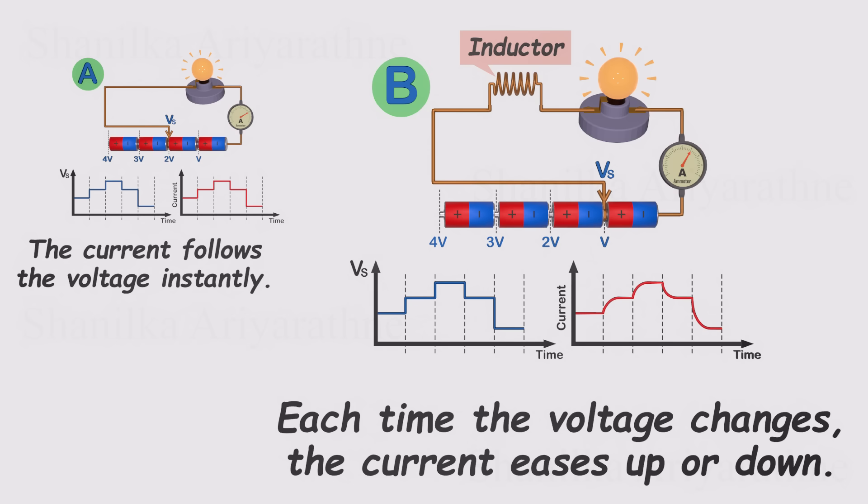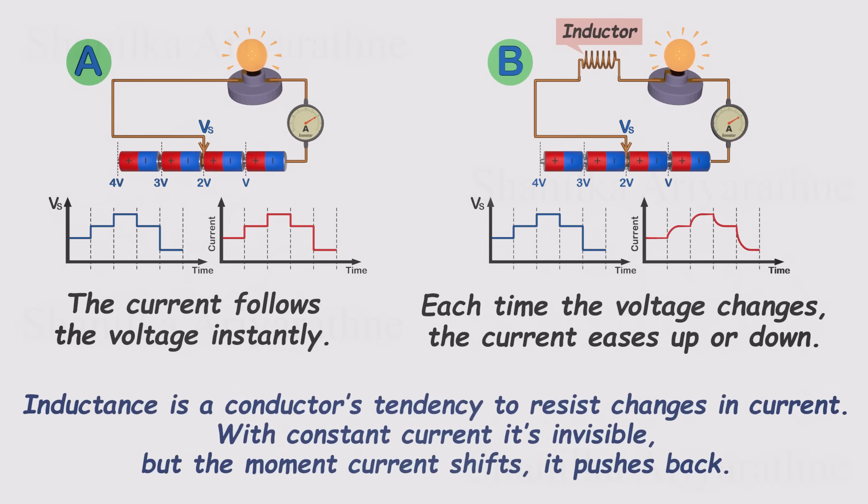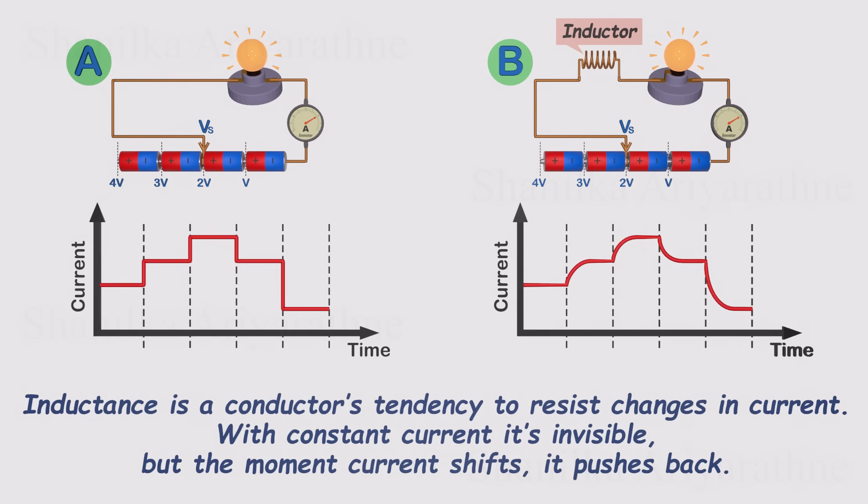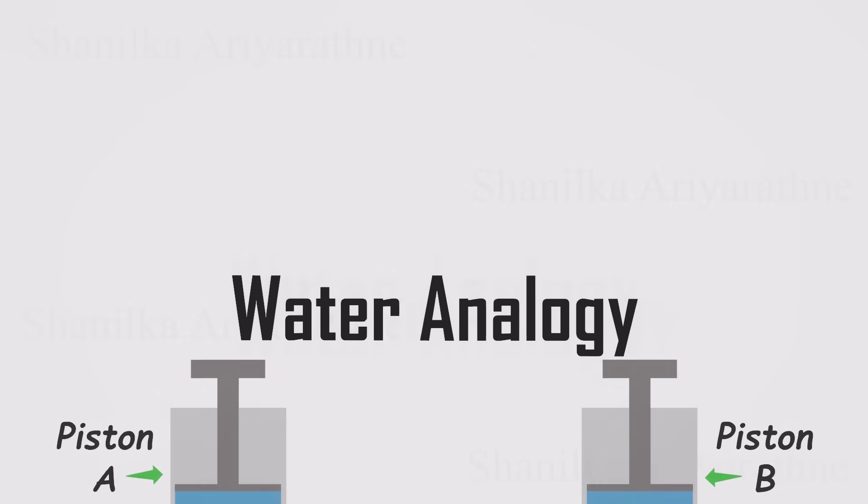It's almost like the coil is saying, whoa there, let's smooth this out a bit. And that's inductance in a nutshell. It's the tendency of a conductor to resist changes in current. When the current is steady, an inductor is practically invisible, behaving just like an ordinary piece of wire. But the moment the current starts to change, the inductor pushes back. This behavior can be incredibly useful in some situations. But in others, it can cause some serious headaches. And that's exactly what we're going to dig into in this video.